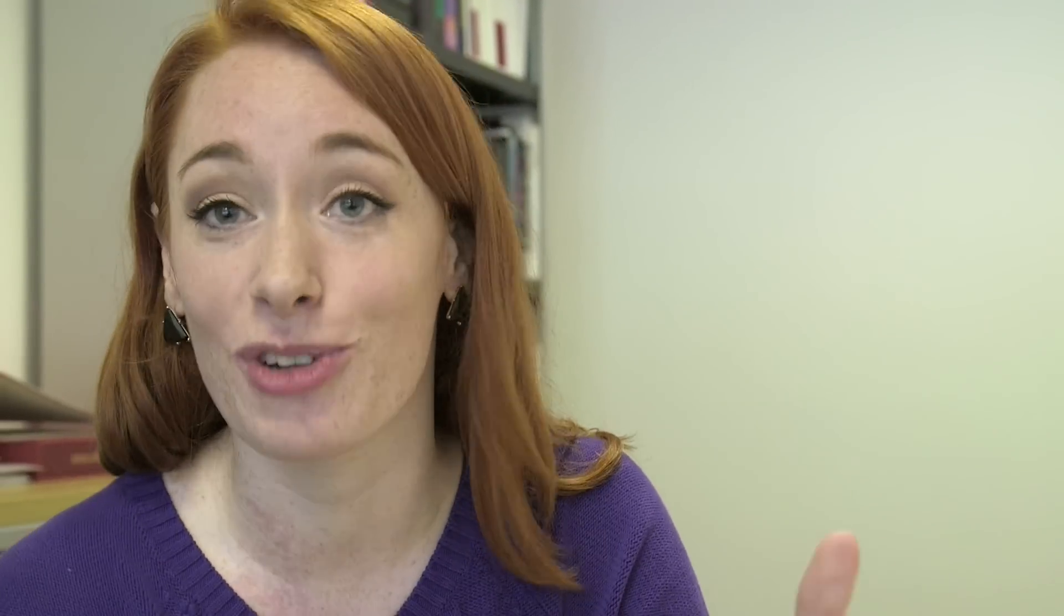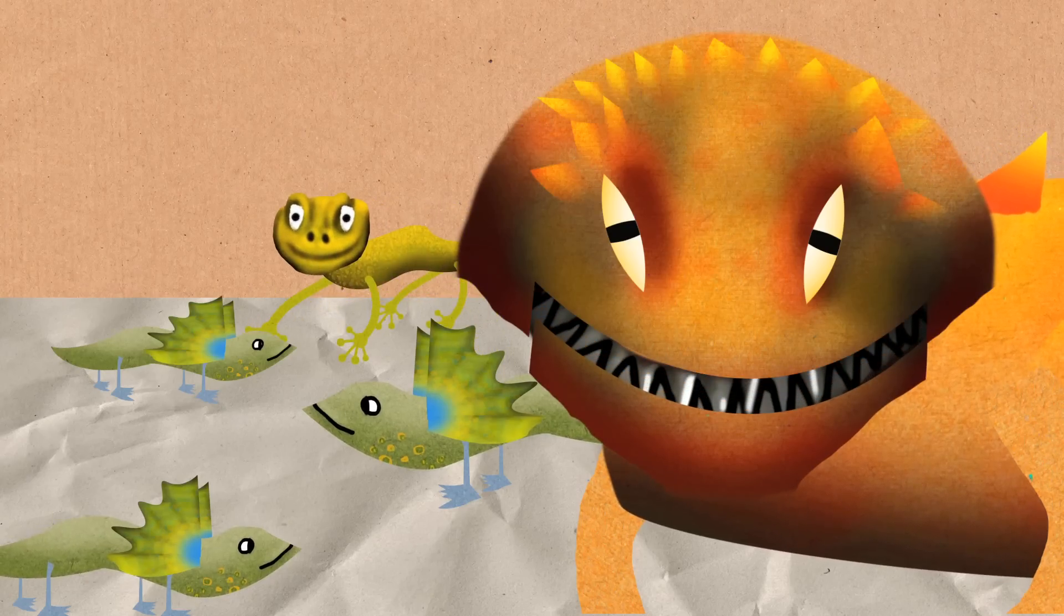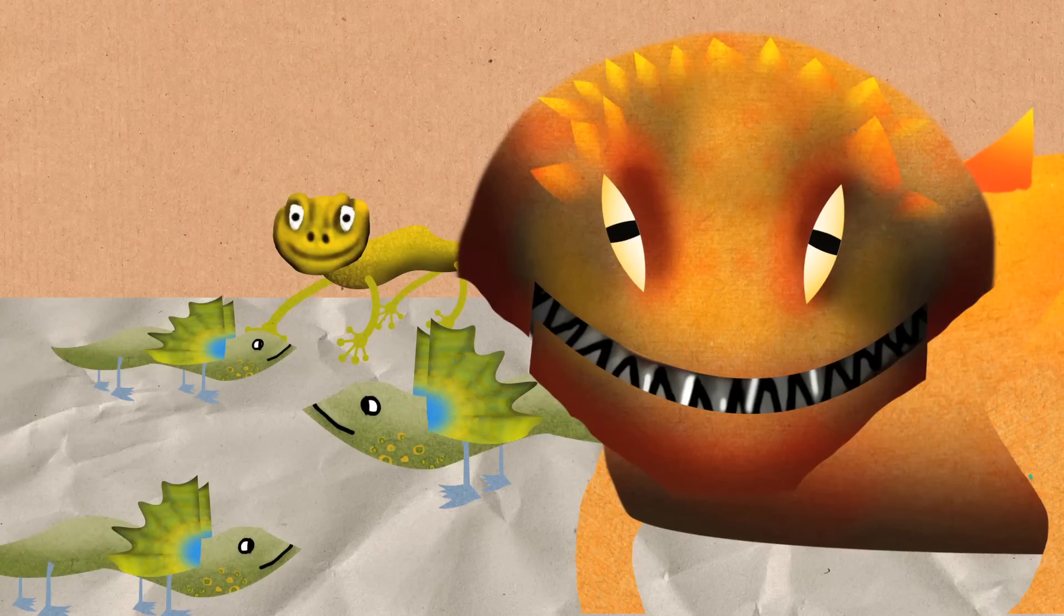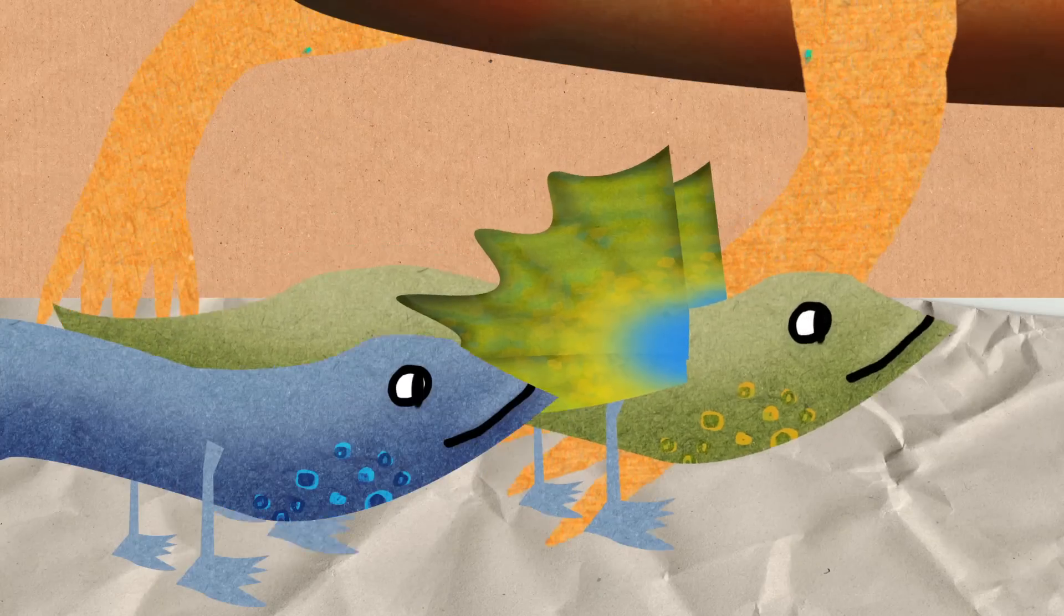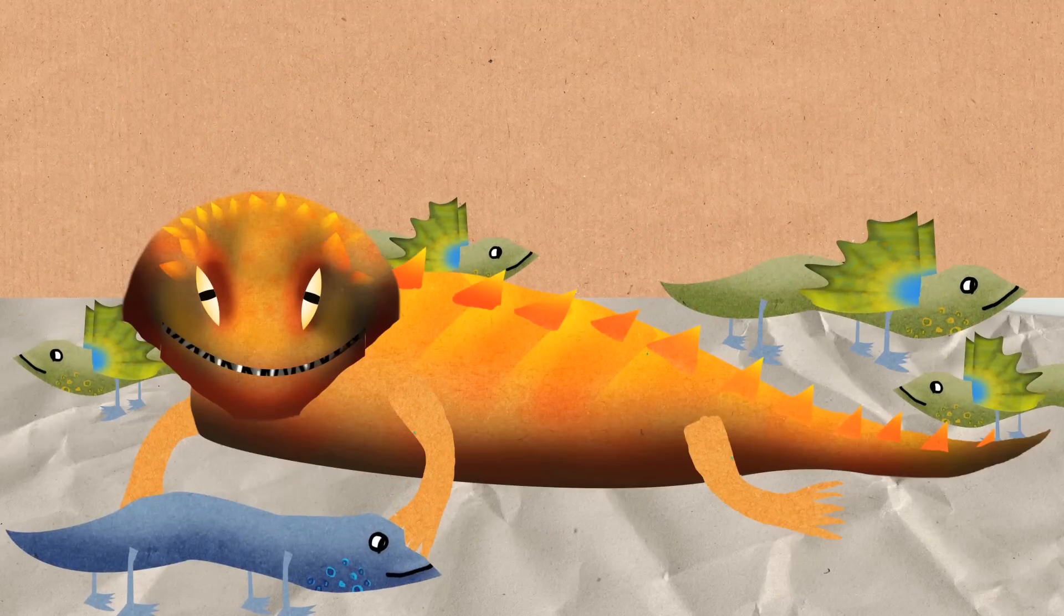So the orange lizards who have really big territories, lots of females, the sneakers, the yellow lizards, can come in and steal their females very easily. But the orange lizards can steal females from the blue lizards who have a very small territory. Obviously the big territory is really attractive to the female lizards.